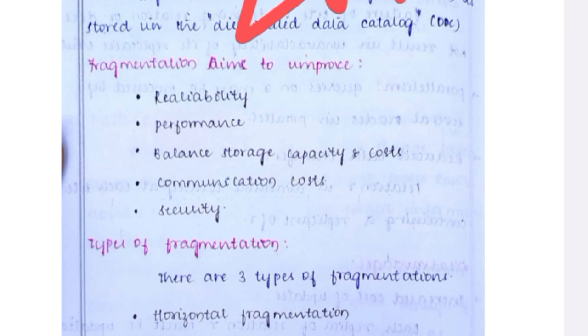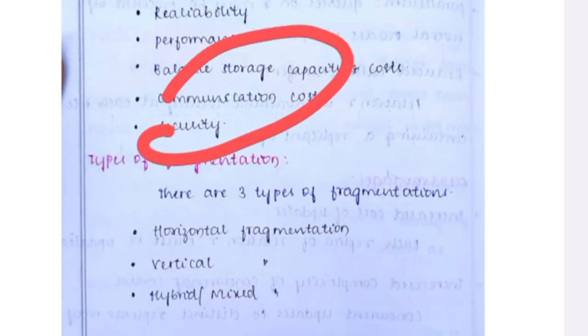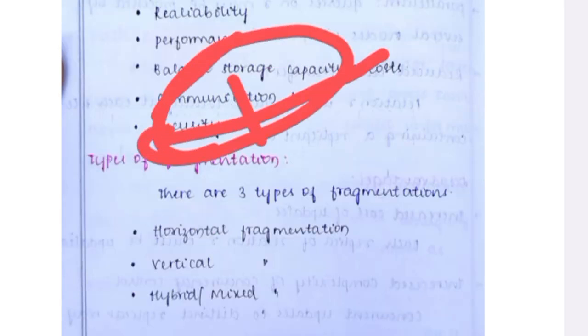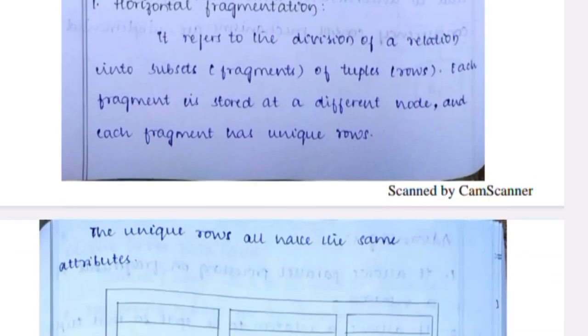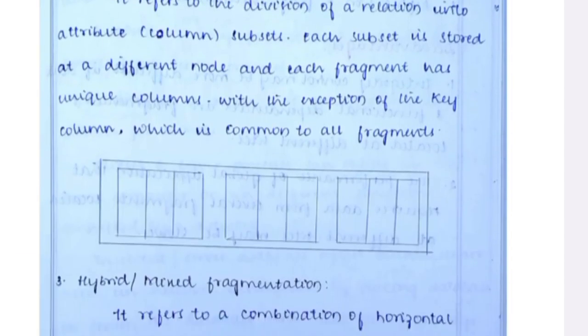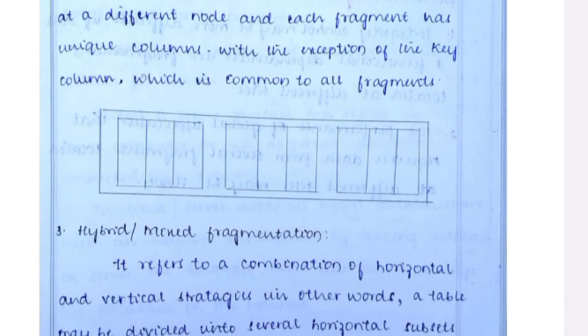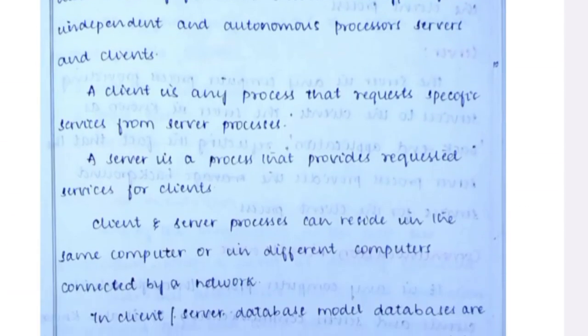Data fragmentation is also useful for a two-marks question. Data fragmentation means breaking a single object into two or more segments or fragments. For example, a database is broken into four parts — that is called data fragmentation. Just look at the diagram and you will easily understand it.